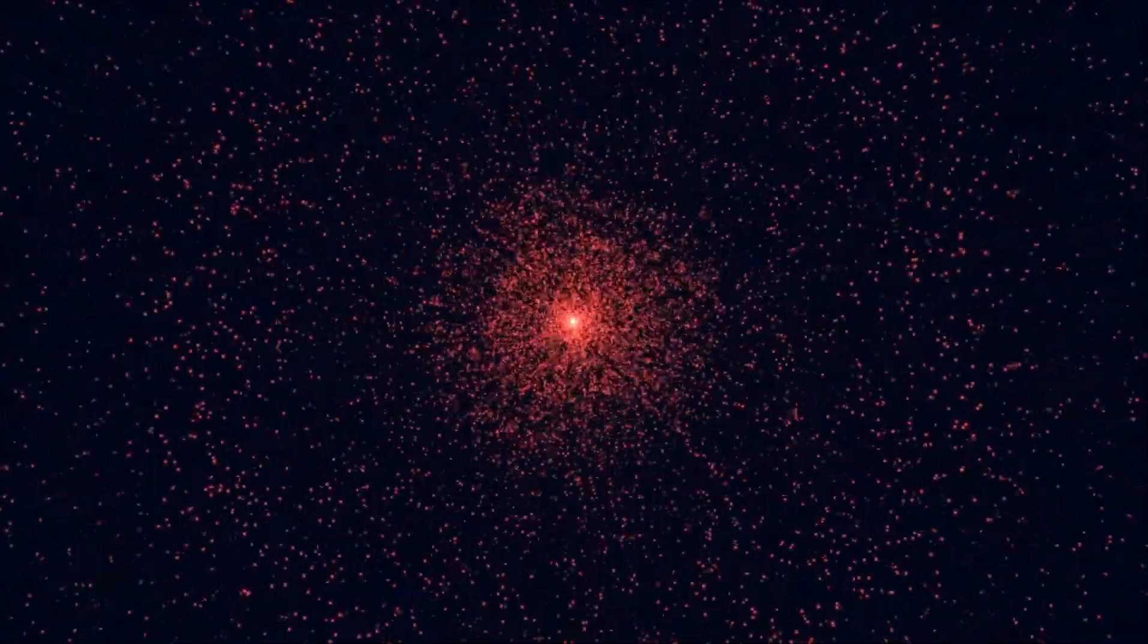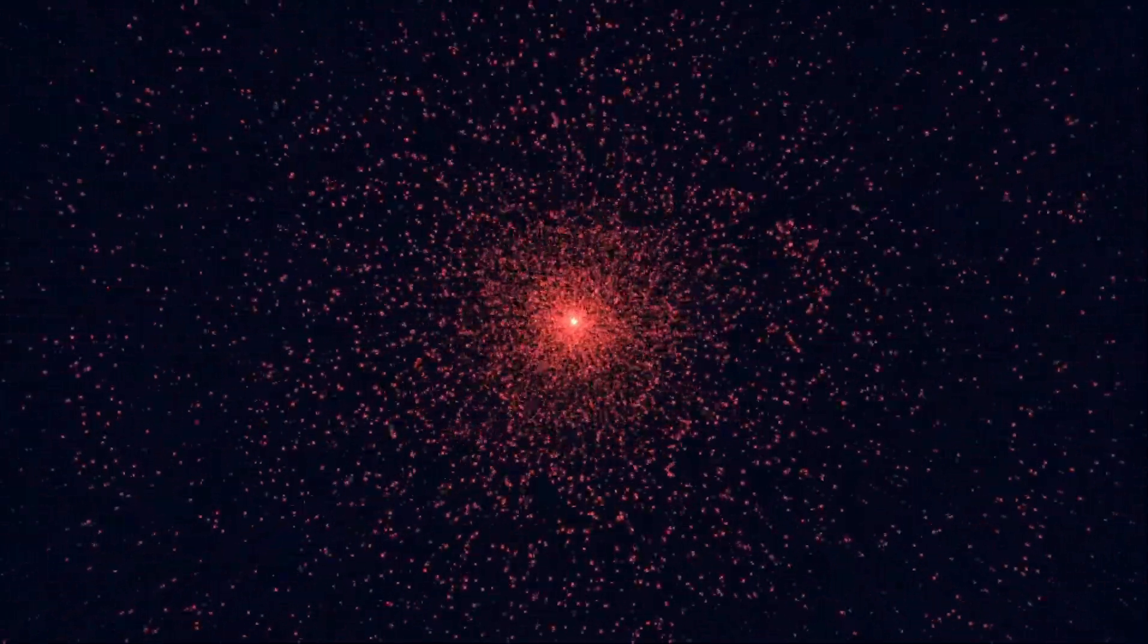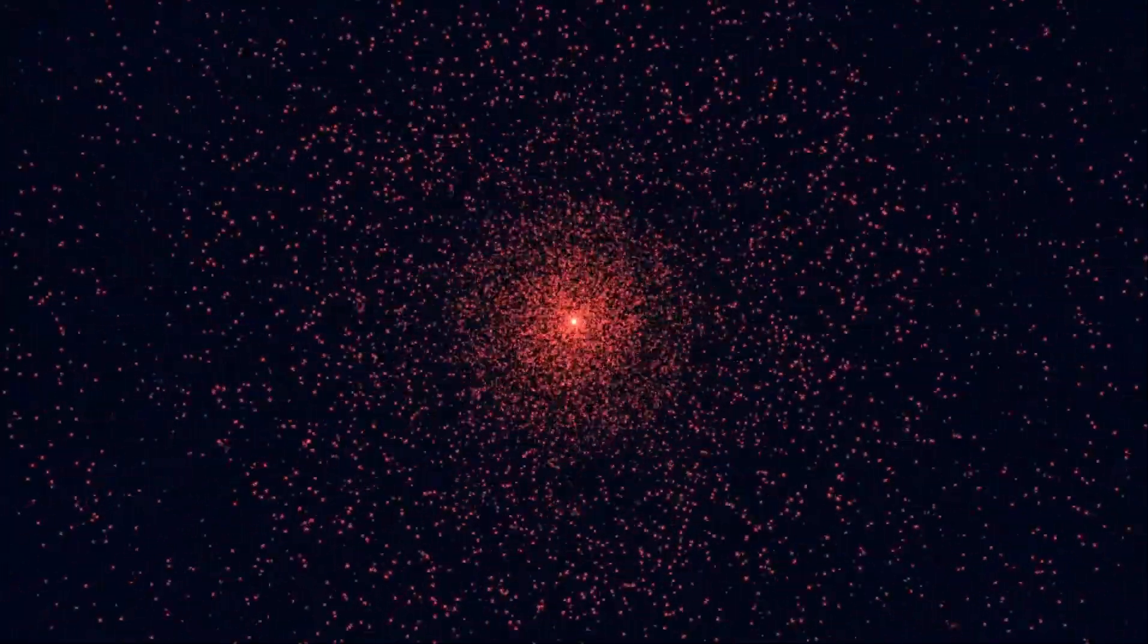One of its defining features is its distinctive red hue. Unlike stars like our Sun, which shine with a bright yellow light, Betelgeuse's surface temperature is relatively cool, around 3,500 Kelvin compared to the Sun's 5,500 K. This cooler temperature results in the star's red appearance, providing astronomers with important clues about its internal processes and state of evolution.